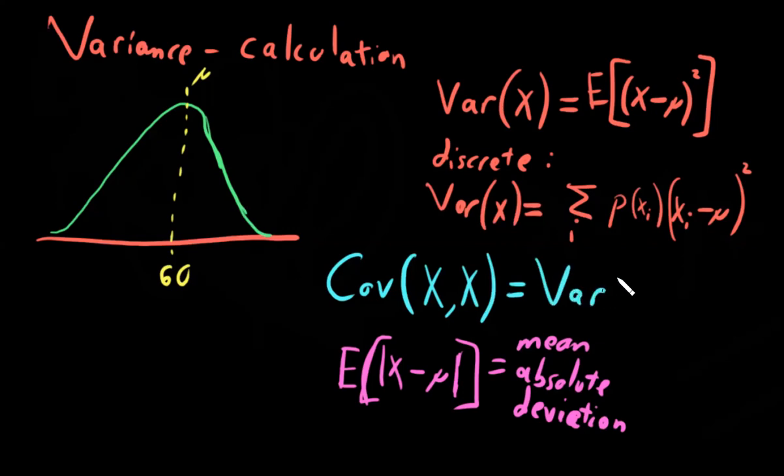This property will be extremely useful when doing multi-dimensional statistics, and it explains very naturally why there's a squared term here in variance. Because the expression for covariance is just the spread of one variable minus its mean times the spread of the other variable minus mean.